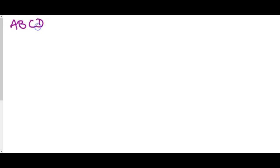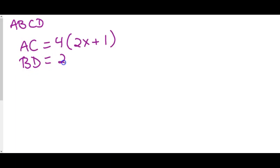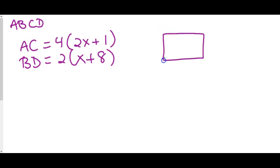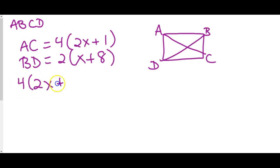We can have more complicated equations too. Say we have rectangle ABCD where AC equals 4 times the quantity 2x plus 1, and BD equals 2 times the quantity x plus 8. Since ABCD labels the corners in order — like traveling in a circle A to B to C to D — we can see that AC and BD are the diagonals, so we set them equal to each other.